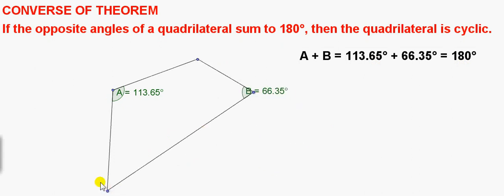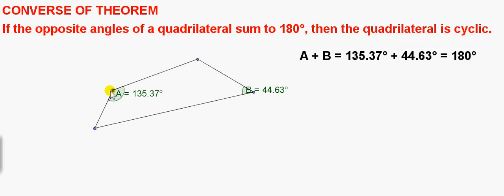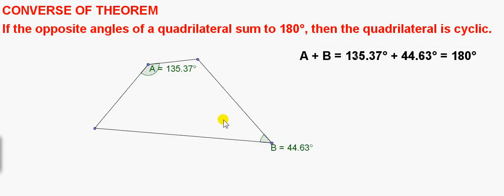So, if I just update some of these values, this is set up so that A plus B is always 180 degrees. We can circumscribe a circle about this quadrilateral.